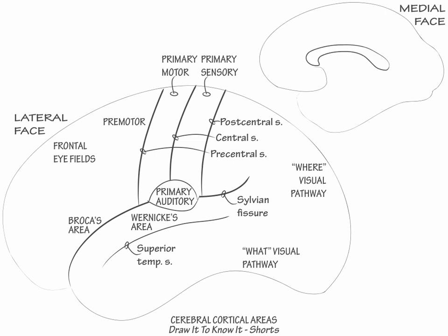First, draw the calcarine sulcus and show that the primary visual cortex, Brodmann area 17, lies on its banks. Visual cortical processing begins within this area.